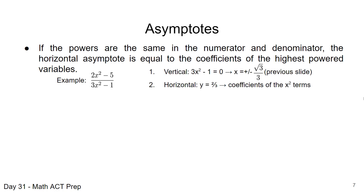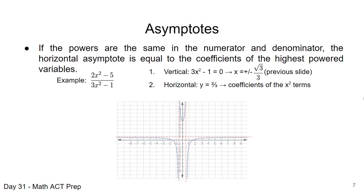So the vertical asymptote is found by setting the denominator equal to zero and solving for x. The horizontal asymptote uses the coefficients of the x squared terms, giving us y equals 2 thirds. Looking at the graph, we can see the two vertical asymptotes — because we had plus or minus from taking the square root — and one horizontal asymptote at y equals 2 thirds.